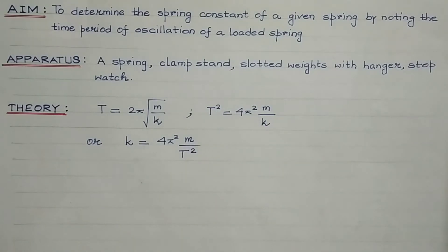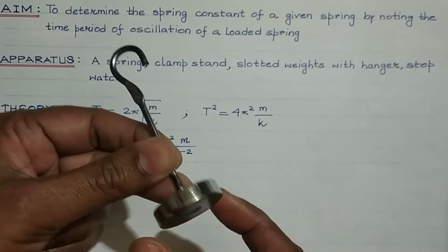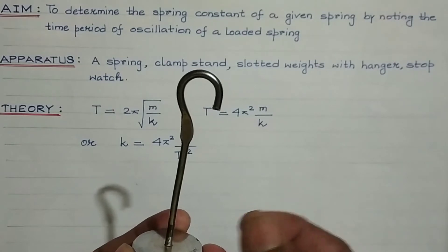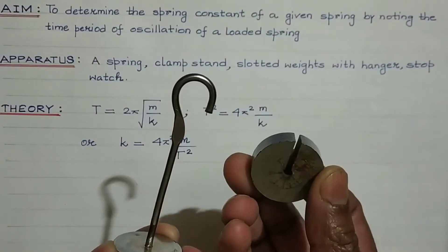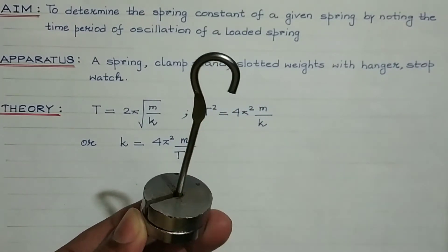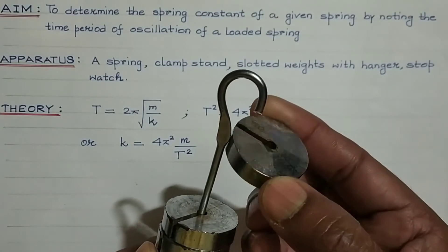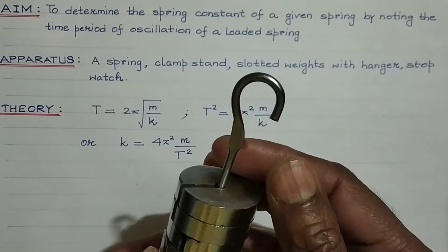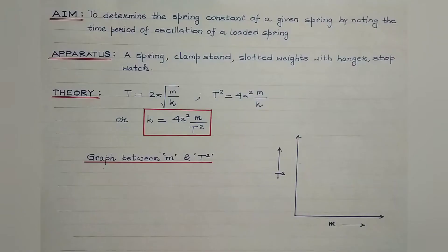We will be making use of a slotted weight and hanger — the hanger is of mass 50 grams and is attached at the free end of the suspended spring. We increase the mass by 50 grams each step. Adding one slotted weight makes it 100 grams, then 150, 200, and 250 grams. We note the time taken to complete 20 oscillations for each load.